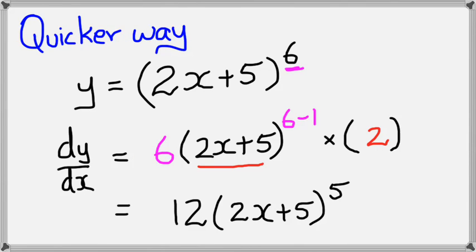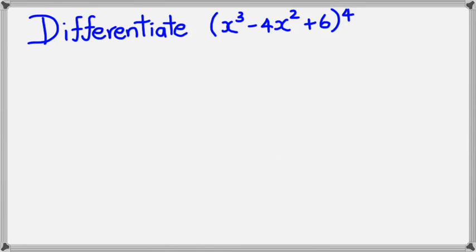I want to have a look at one quick example, and then we're done with this. The example I'm looking at is: differentiate x³ minus 4x² plus 6 to the power of 4. So I have y equals x³ minus 4x² plus 6 to the power of 4.